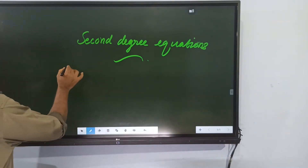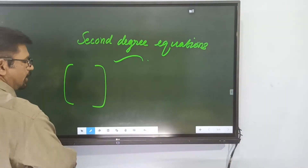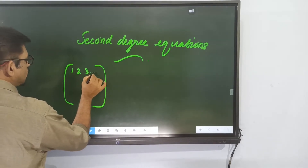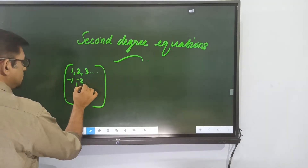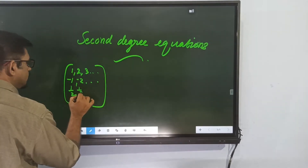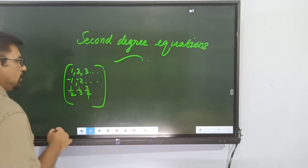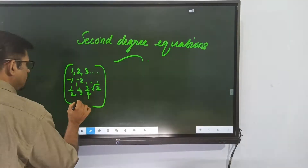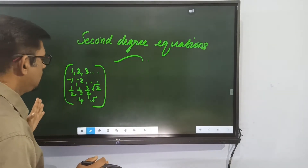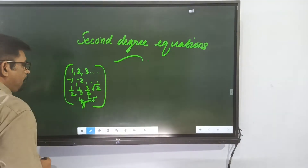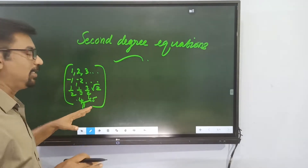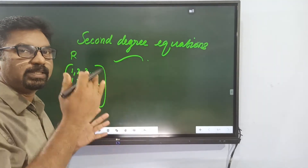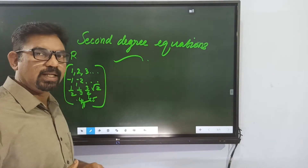We have two collections. We have all numbers — one, two, three, negative two, fractions like two-thirds, integers, radicals, all rational numbers. If you are familiar with these numbers, this will be the collection of real numbers, including fractions, negative numbers, positive numbers, integers, and radicals.